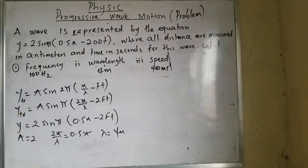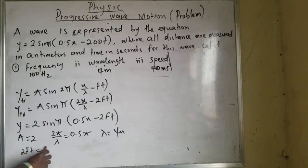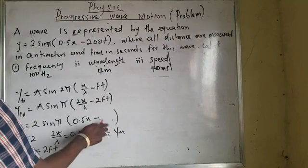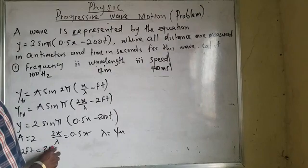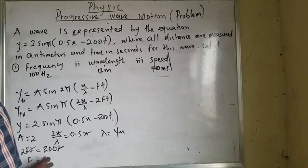You can do the same thing here. My A becomes 2. My 2x over lambda equals 0.5x — this cancels — and by solving that, my lambda equals 4 meters. Yes, my lambda is 4 meters, because 2 divided by 1 over 2 becomes 4. From the equation 200t, we cancel t, divided by 2 it will be 100. My f equals 100 hertz.